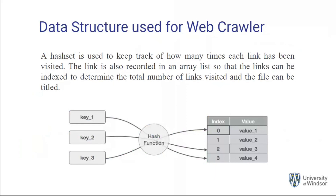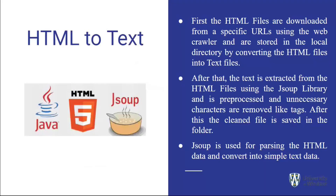The webcrawler first visits the current page, parses it, and puts all hyperlinks into the queue. When it completes the current page, it takes the next URL from the queue. This is essentially a breadth-first search approach — it first visits all links on the current page and then visits all of the nested hyperlinks.